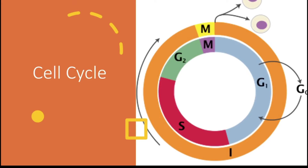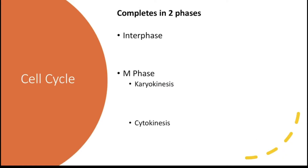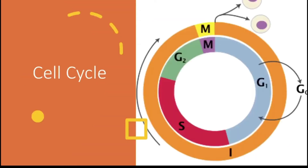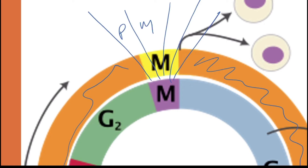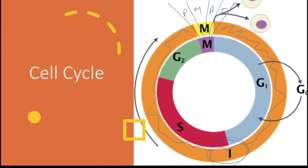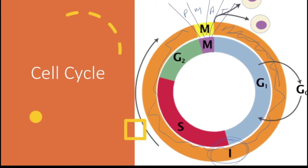Looking at the cell cycle diagram, everything shown in orange is interphase, and the small portion is the M phase — which includes prophase, metaphase, anaphase, and telophase. Think of the circle as representing time. Interphase takes up the most time; the mitotic phases take the shortest. For example, if the whole cycle takes 20 hours, only perhaps four hours might be for the mitotic phases.